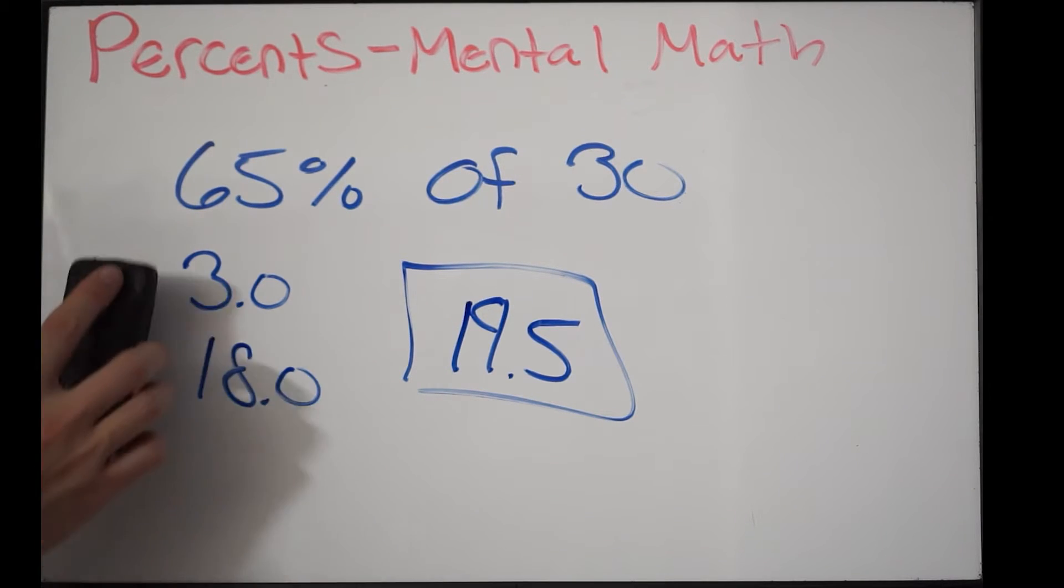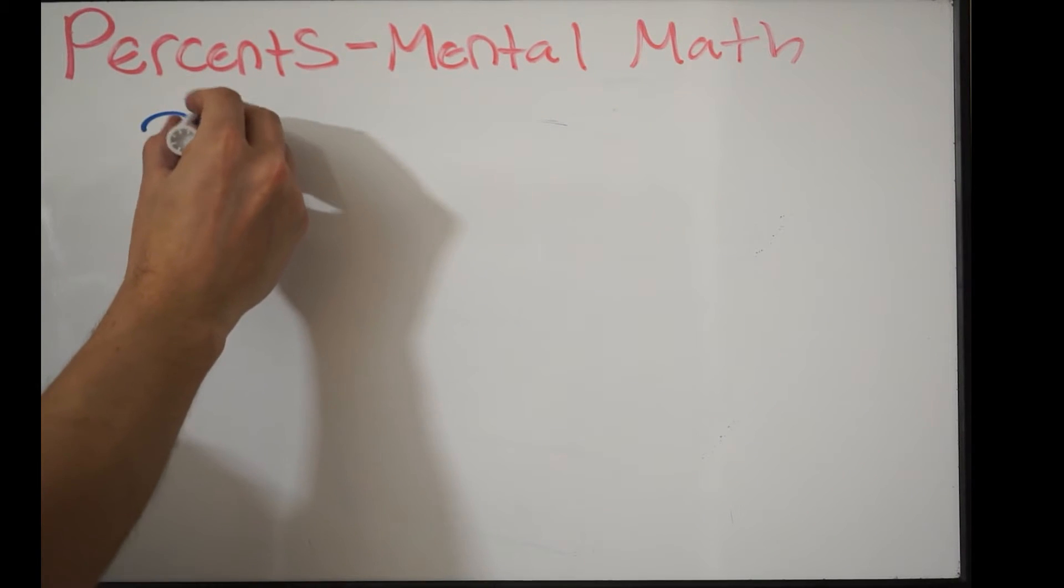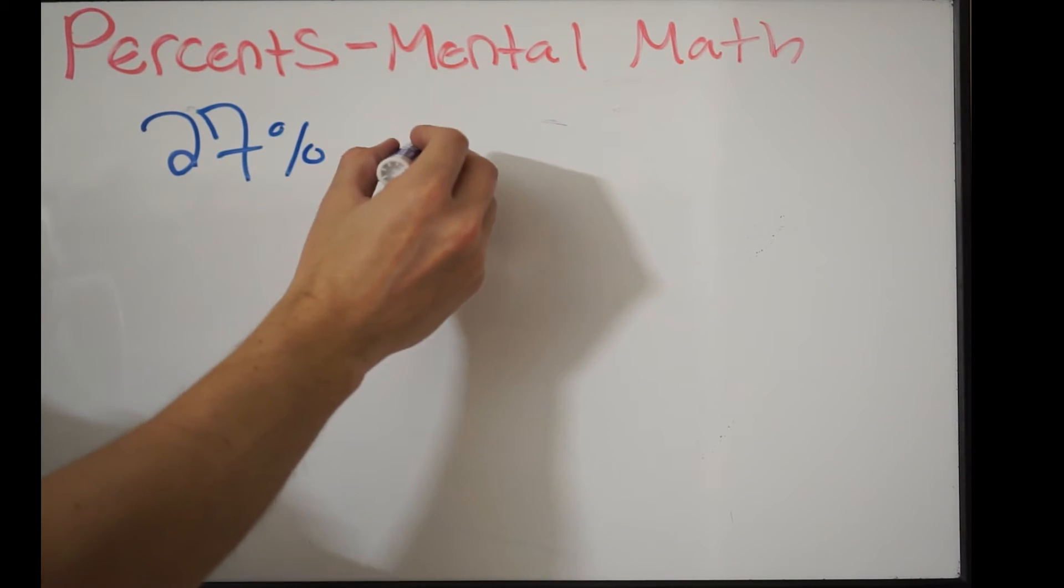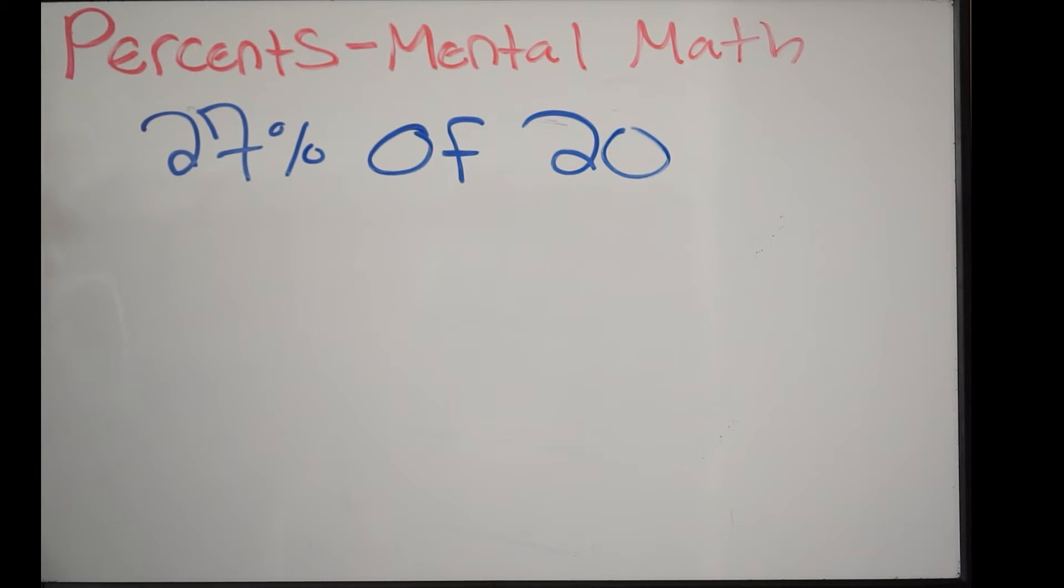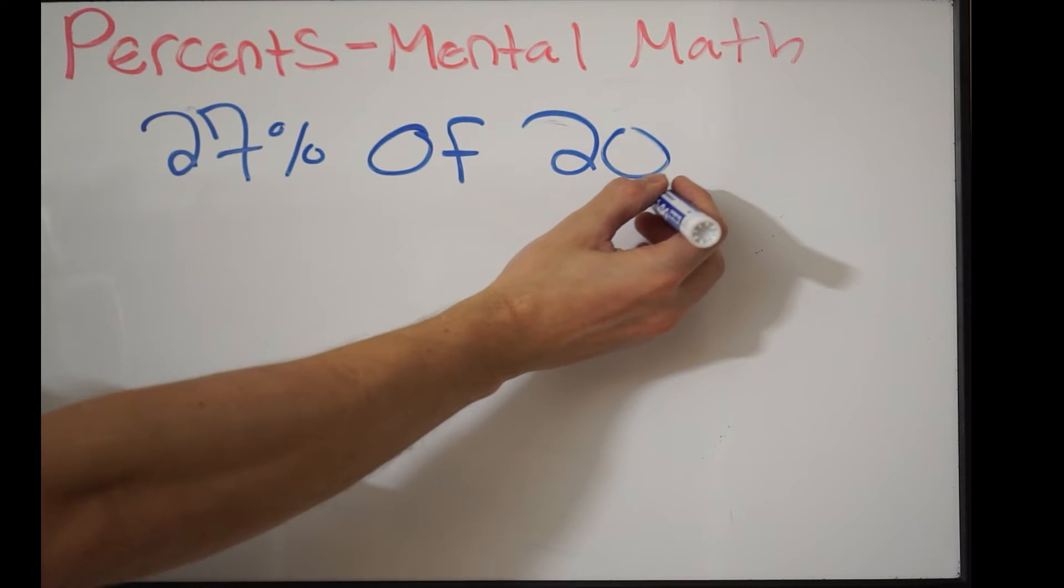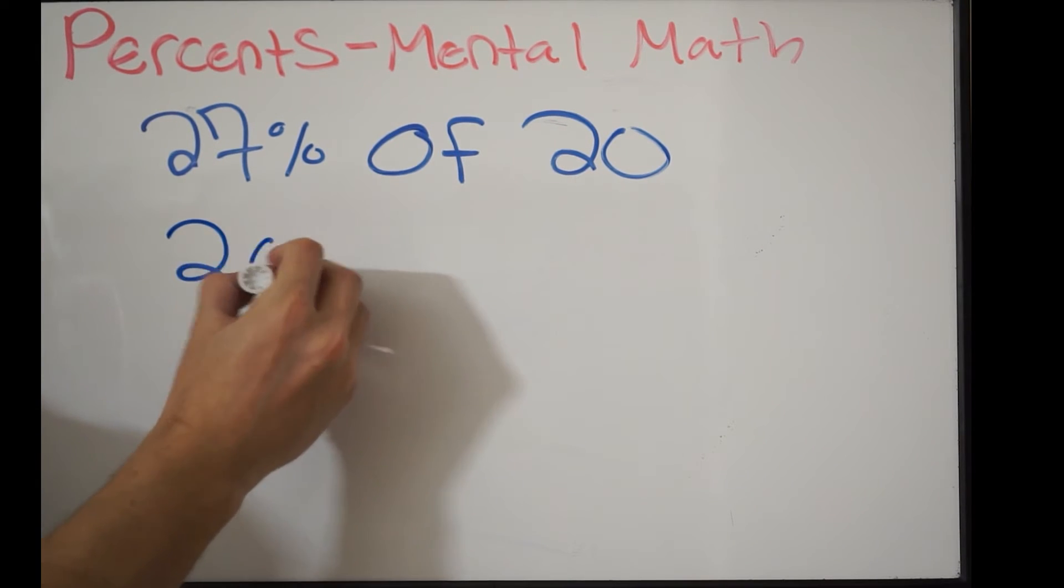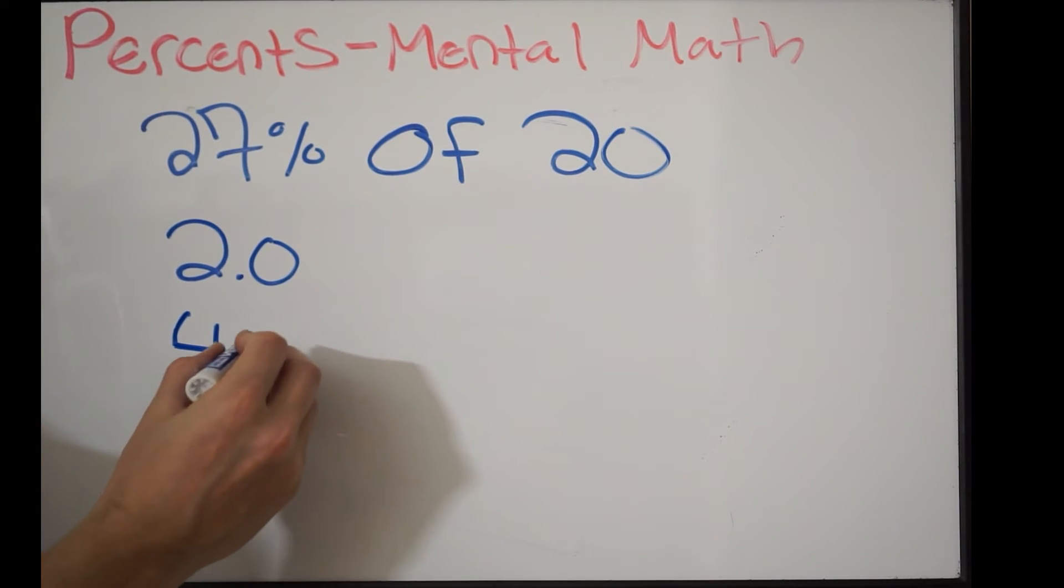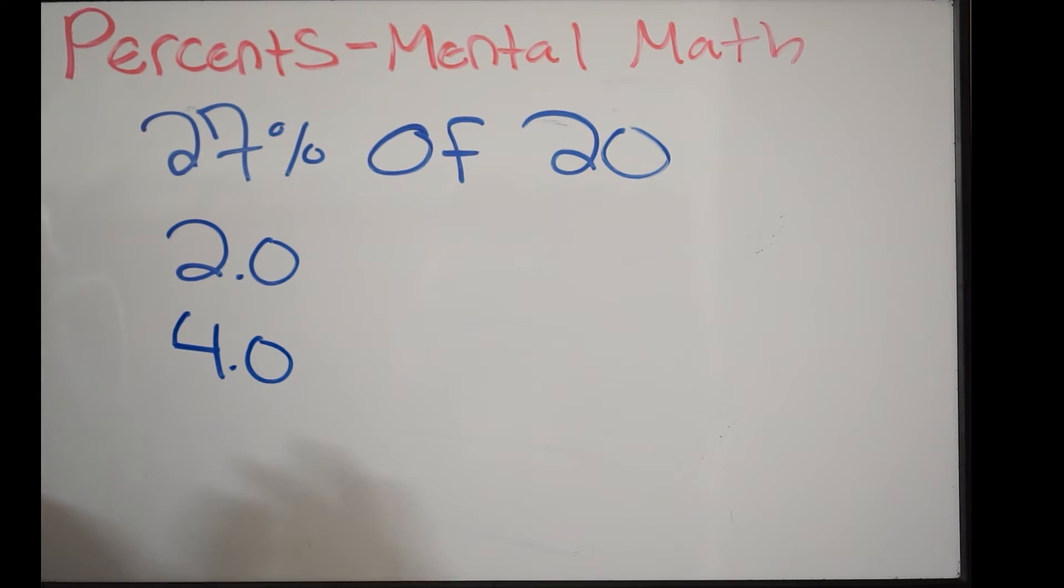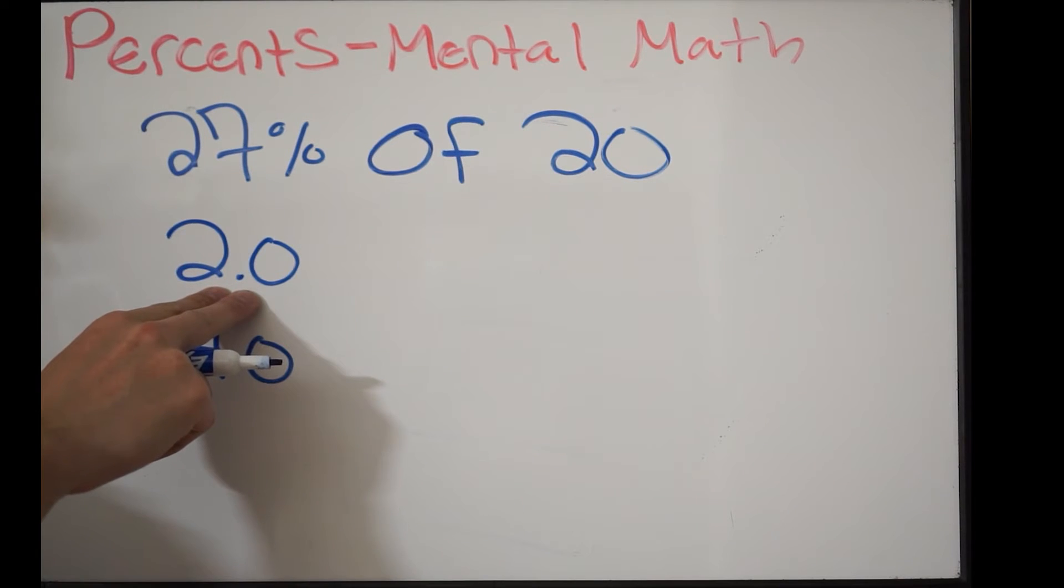Let's try one more example. Here I have 27% of 20. This one will be a bit more challenging. First thing, let's find 10% of 20. Just take that decimal point and move it one place over to the left. That's going to give you 2.0. Then I multiply it by 2 to get 20%. That gives me 4.0. Now I'm at 20%. Let's find 25%. Divide this by 2 because that was 10%. That's going to give me 1.